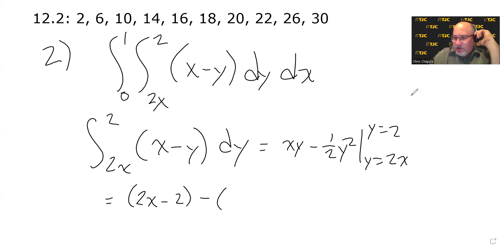And on the lower limit of integration, when we substitute y equals 2x, we'll get something a little bit more substantial. When we substitute the y for 2x and x times y, we get x times 2x, which is 2x squared.